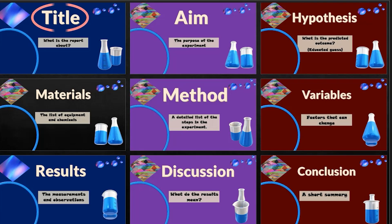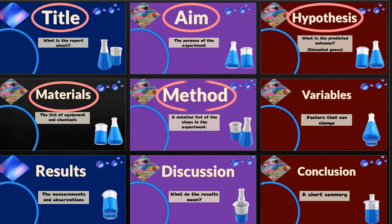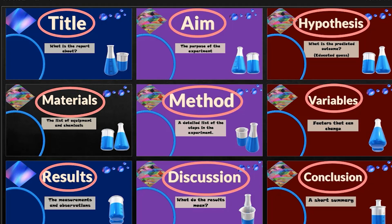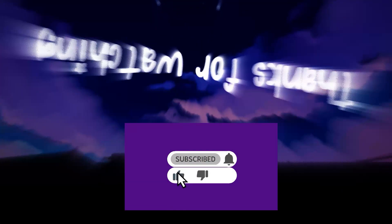There we have it, the different sections of a scientific report. Title, aim, hypothesis, materials, method, variables, results, discussion, and conclusion. Thanks for watching!